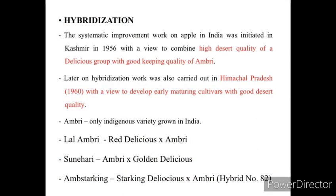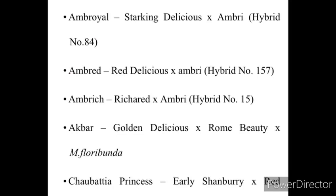The second method is hybridization. The systematic improvement work on apple in India was initiated in Kashmir in 1956 with a view to combine the high dessert quality of the delicious group with good keeping quality of Ambri. Later, hybridization work was also carried out in Himachal Pradesh in 1960 to develop early maturing cultivars with good dessert quality. Ambri is the only indigenous variety grown in India. Lal Ambri is a cross between Red Delicious and Ambri; Sunheri is a cross between Ambri and Golden Delicious; and McStalking is a cross between Starking Delicious and Ambri.